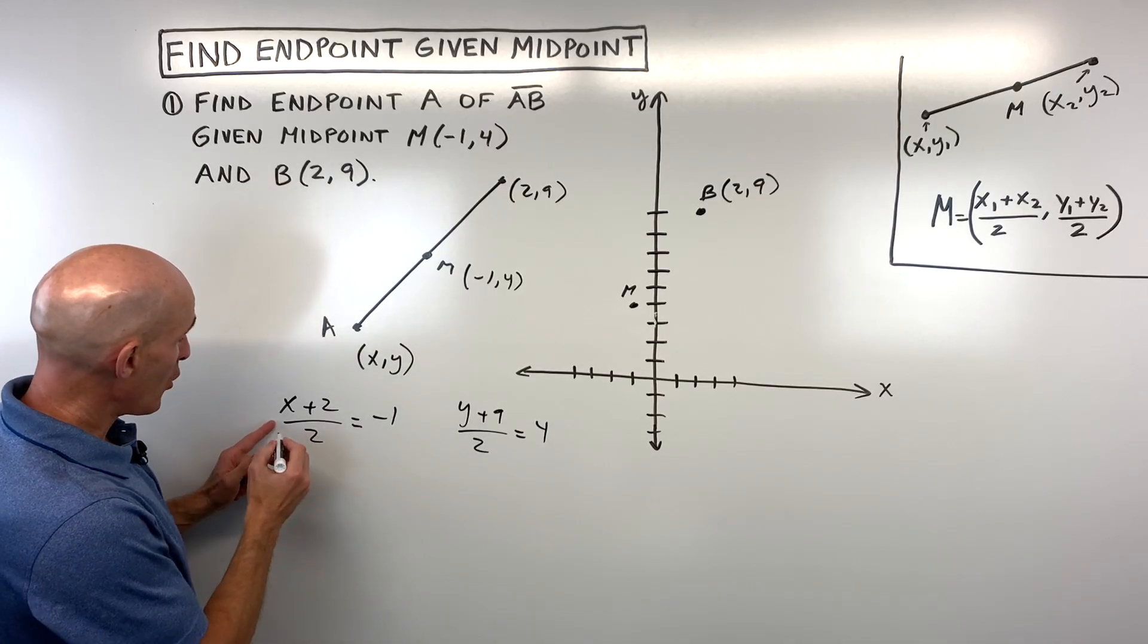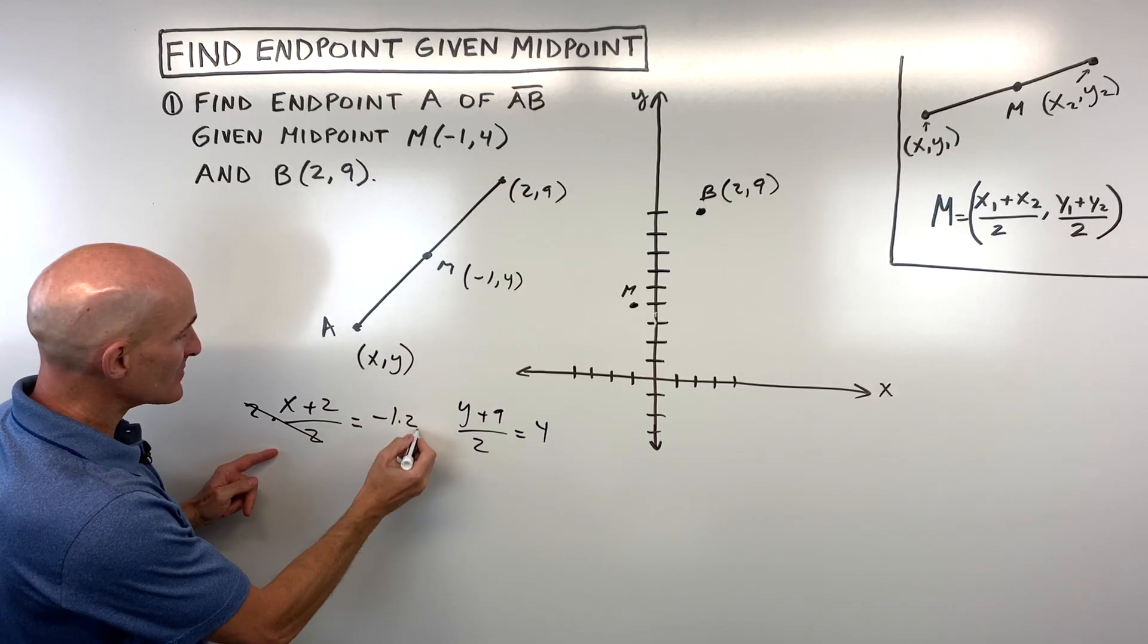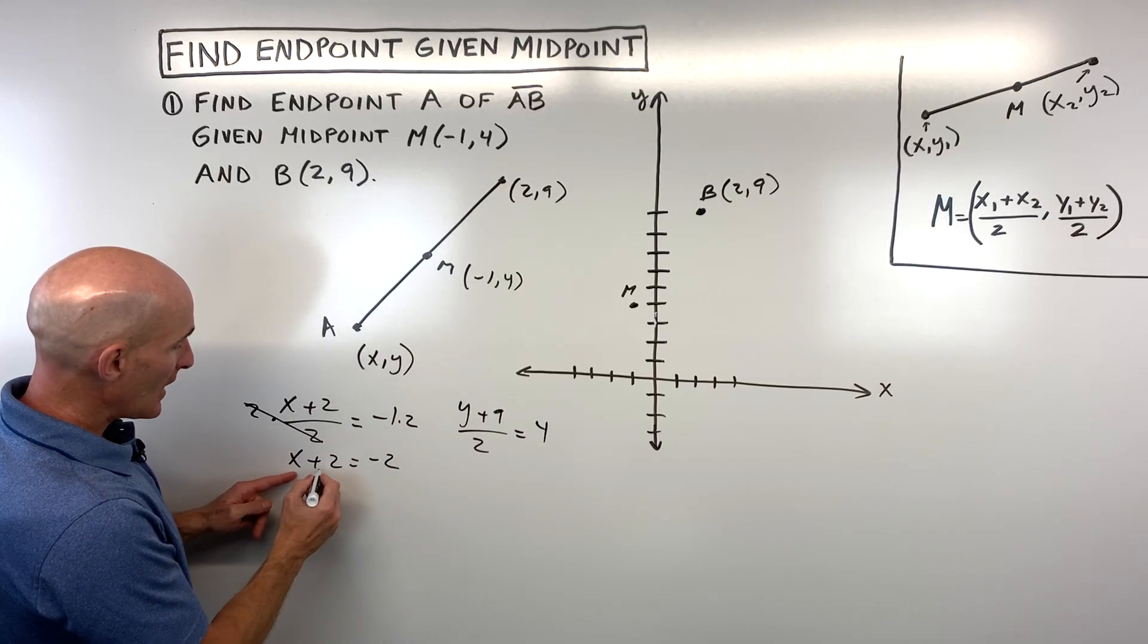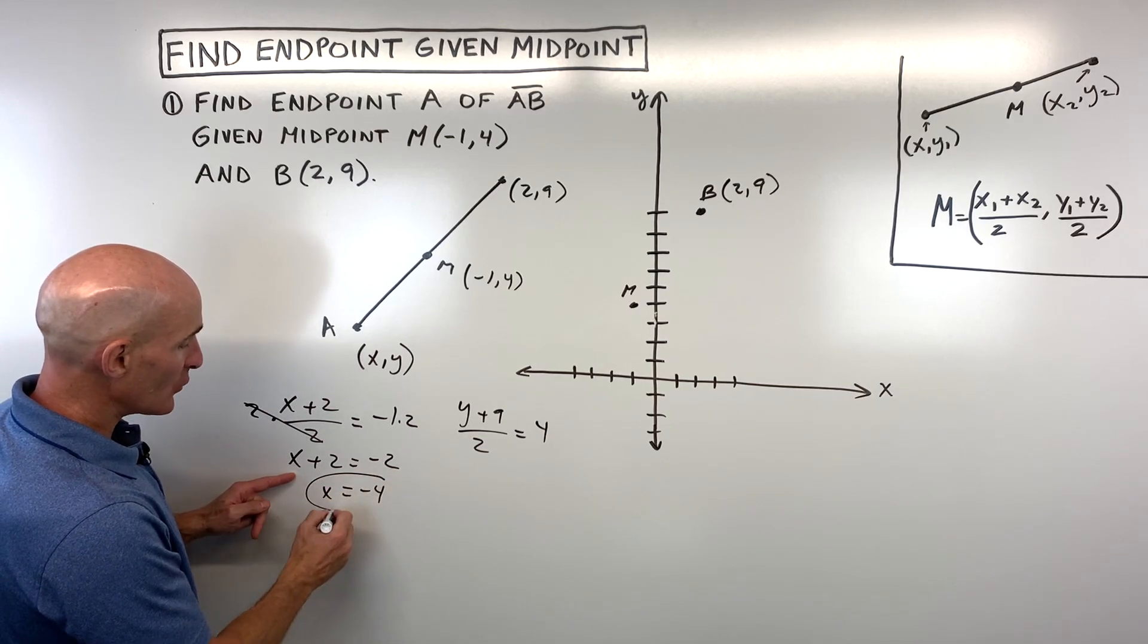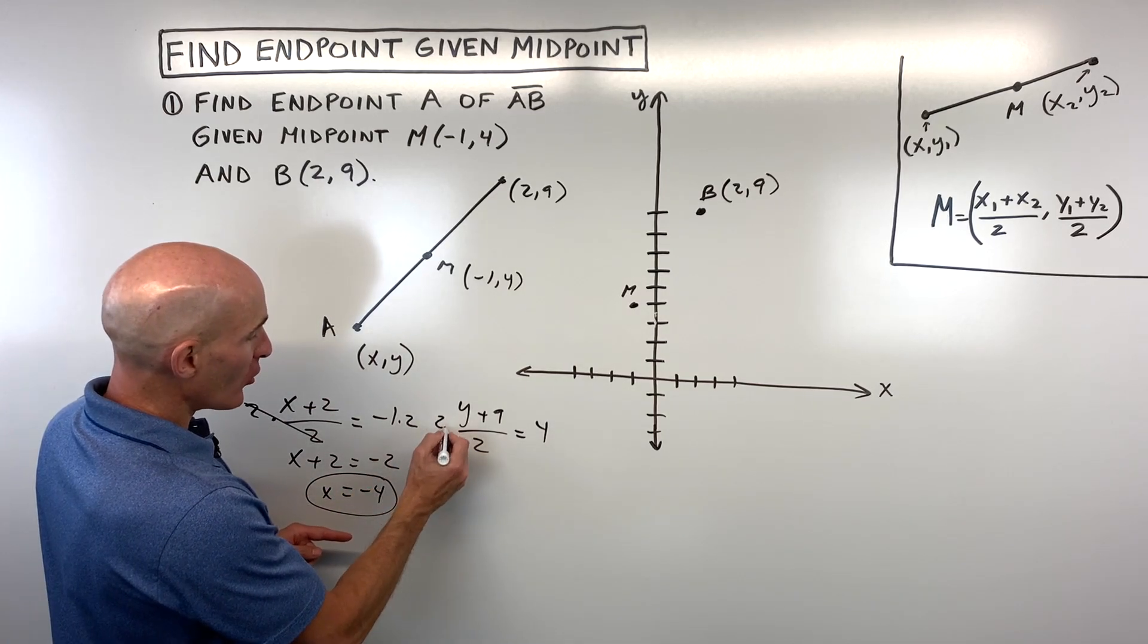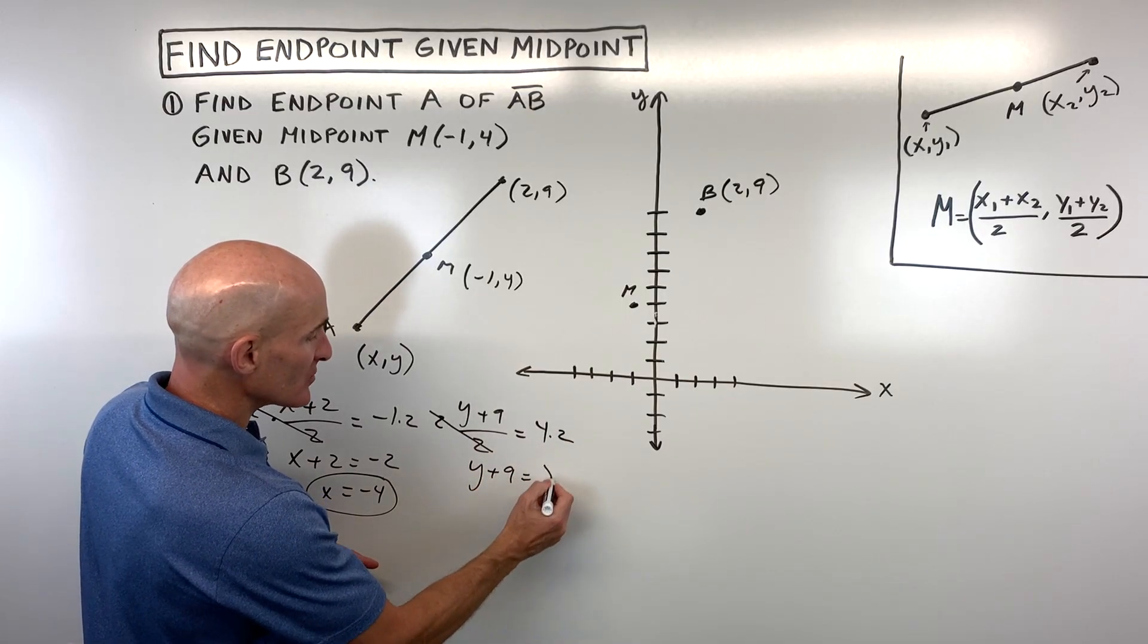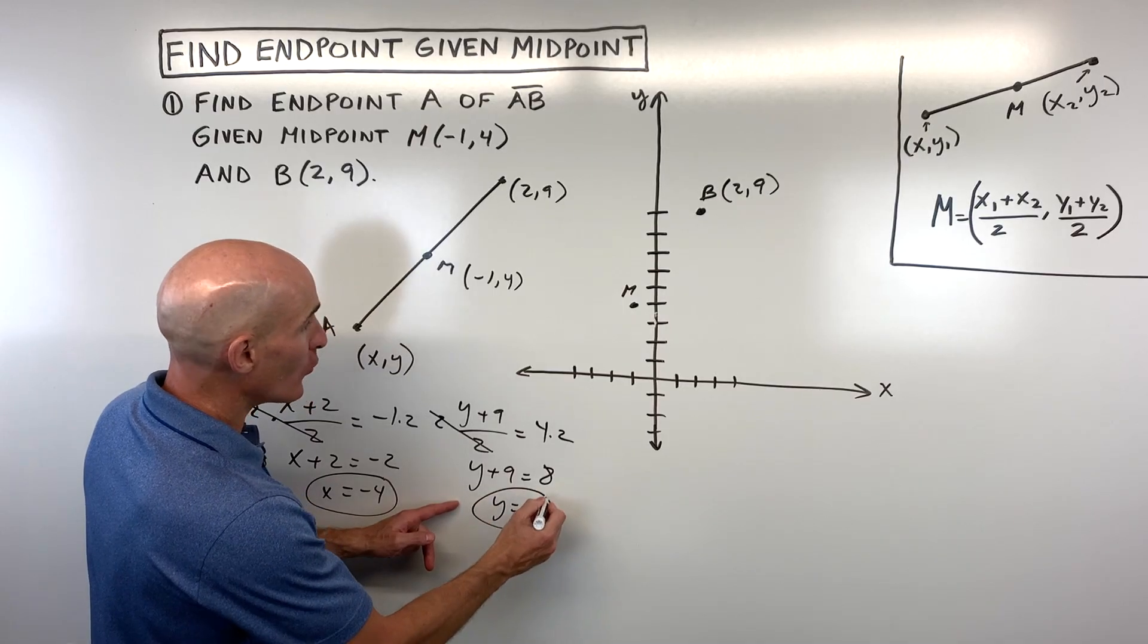Now we're going to solve these two equations. We're going to multiply both sides by two. Instead of dividing by two, we're going to do the opposite, multiply both sides by two. So now we have X plus two equals negative two. And if we subtract two from both sides, you can see that X equals negative four. Over here, if we multiply both sides by two, we get Y plus nine equals eight. And if we subtract nine from both sides, we get Y equals negative one.